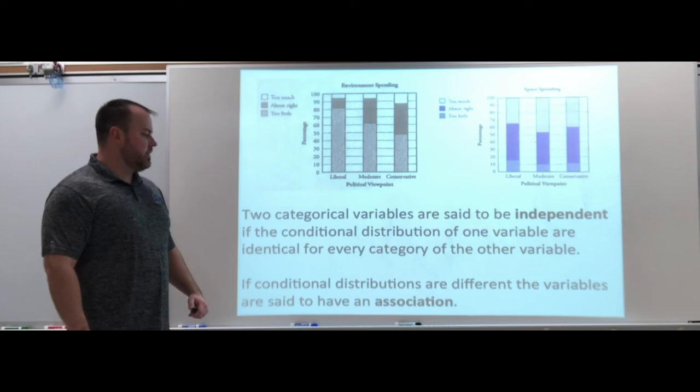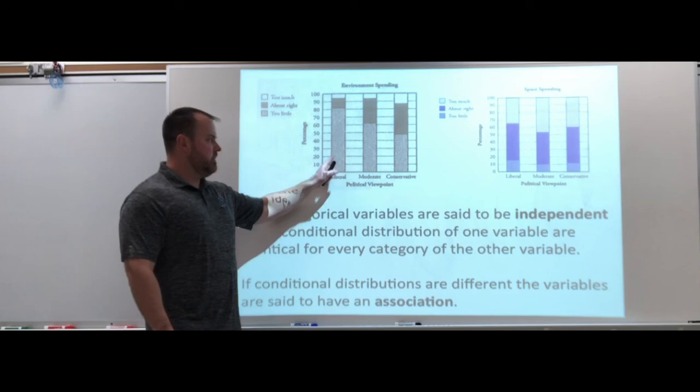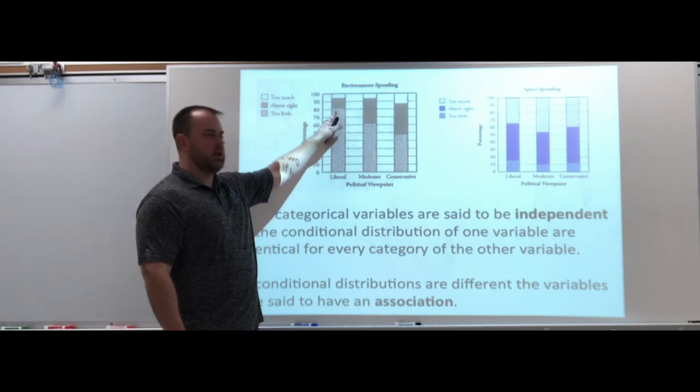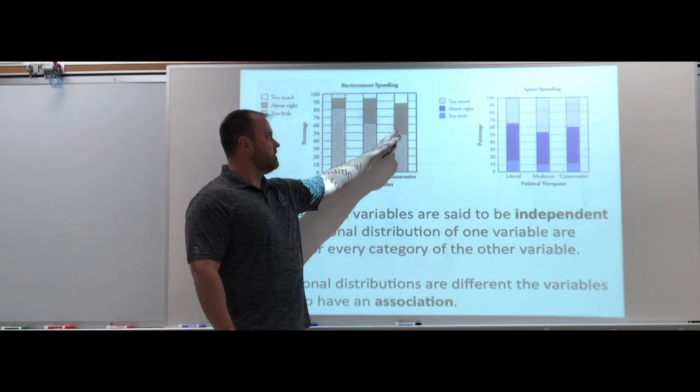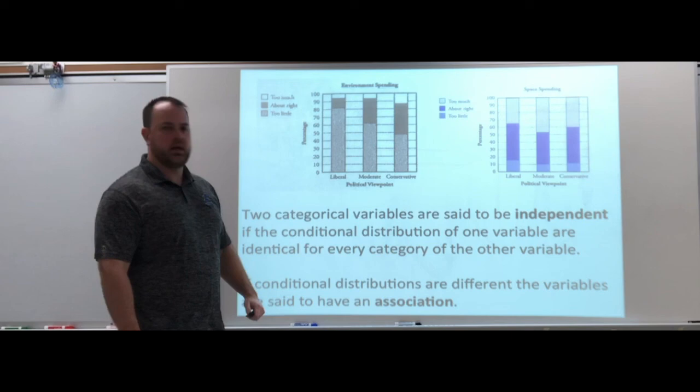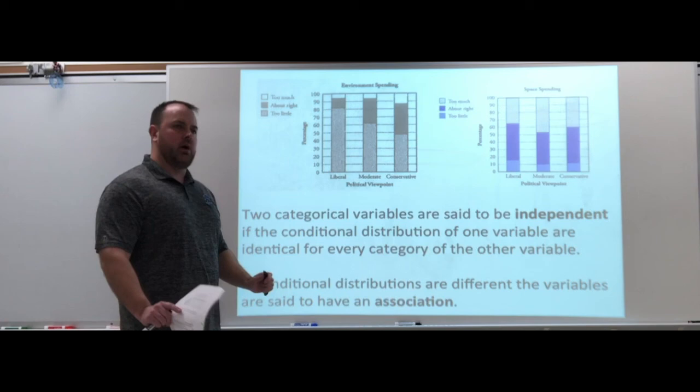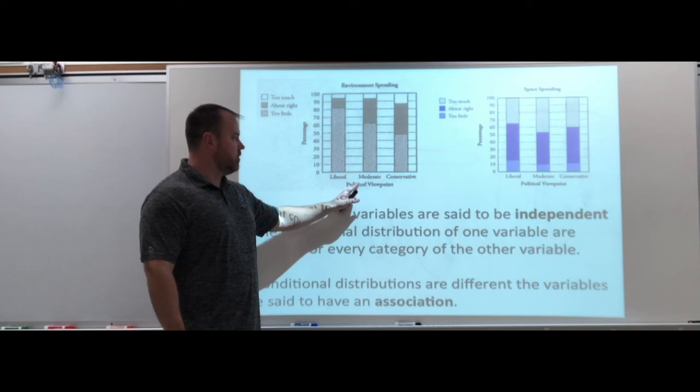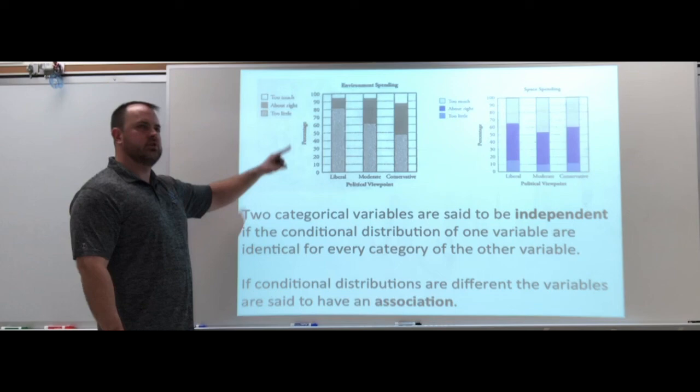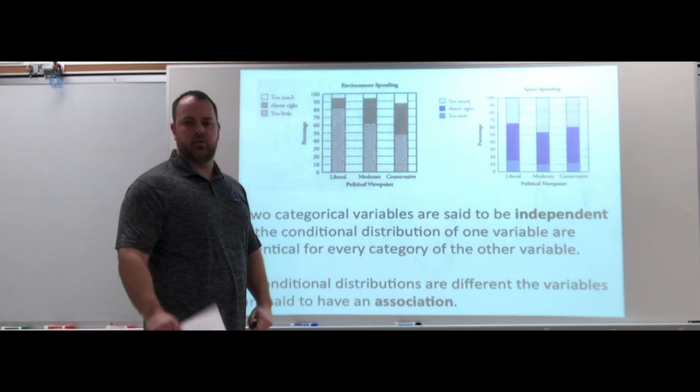If the conditional distributions are different, the variables are said to have an association. That would be this over here. If you're a liberal, there's a much better chance that you think we spend too little on the environment than if you're a conservative. If you're a conservative, there's a much bigger chance of falling into one of the two other groups, either about right or too much. Since there's a difference here, I'm going to say there is a relationship. I want to stay away from saying there are dependent variables, but I do think there's a relationship. Your political viewpoint and how you think we're spending on the environment, there's a relationship there.